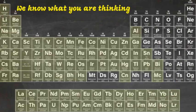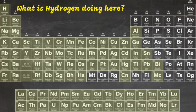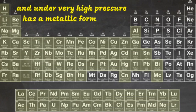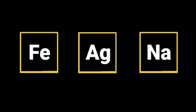Metals. A metal is a substance that conducts heat and electricity, is shiny, and can be hammered into sheets or drawn into wire. Metals occupy the left side of the periodic table. Good examples of metals that we're all familiar with are iron, silver and sodium.